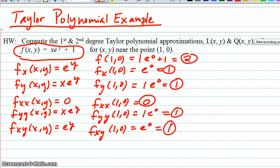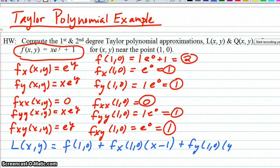So now we get to use those values to create our two Taylor polynomials. So the first one is going to be L(x,y). So L(x,y) will equal f at (1,0) plus f sub x at (1,0) times x minus our a value, our 1, plus f sub y at (1,0) times y minus our b value, or our 0.